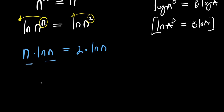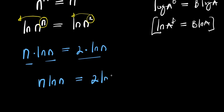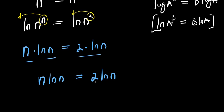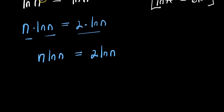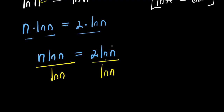So n times natural log of n equals 2 times natural log of n. What we can do is divide both sides by natural log of n. This cancels, giving us n equals 2.